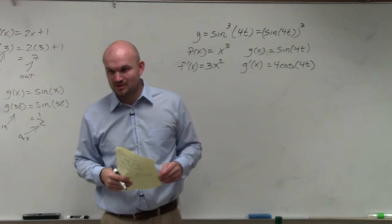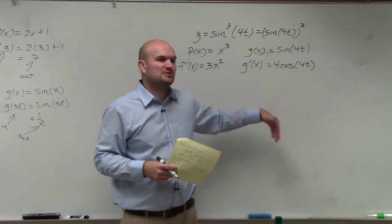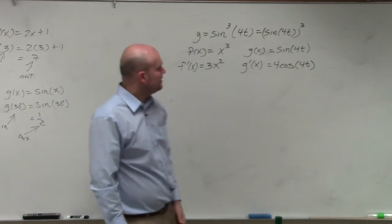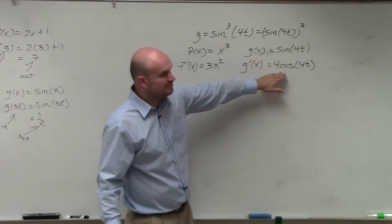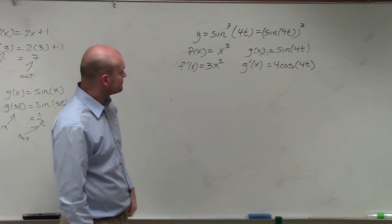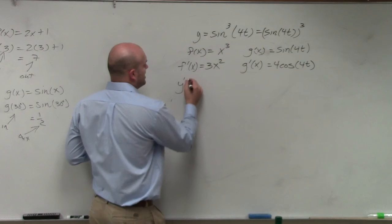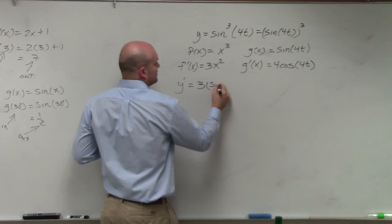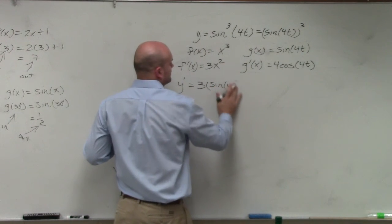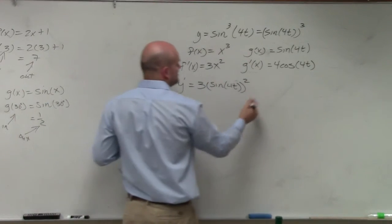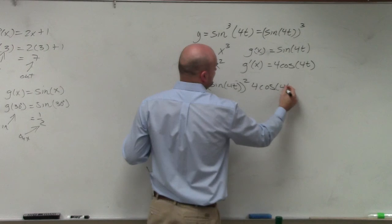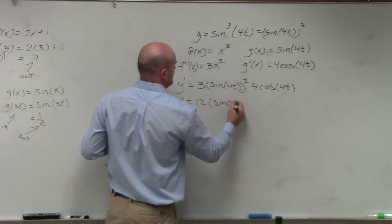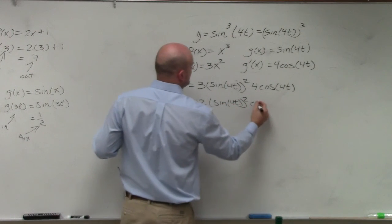Is everybody OK, or does anybody want me to go through that one more time? You can see we have multiple chain rules, and I don't want to always spend so much time doing each one. But to get this, we had to use the chain rule. If you want to break it down into two functions like I did up here, you can definitely do that. So y prime is going to be 3 of sine of 4t squared, and then multiplied by cosine of 4t. So we get 12 times sine of 4t squared times cosine of 4t.